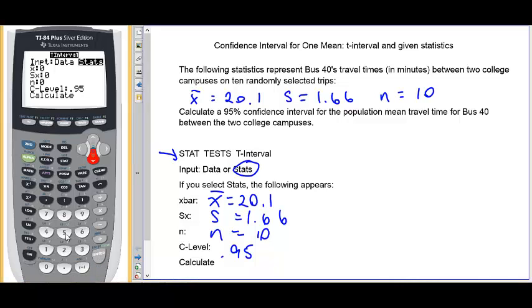X bar, 20.1, press the down arrow. S, 1.66, press the down arrow. N is 10, press the down arrow. 0.95 is already there for 95% confidence, so we go to calculate and press enter.